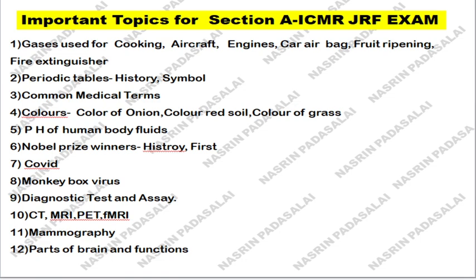First you should study about the gases that are used for cooking, aircraft engines, car airbags, fruit ripening, and fire extinguishing. Next, study about the periodic table, history of the periodic table, and the chemical symbols along with atomic numbers.